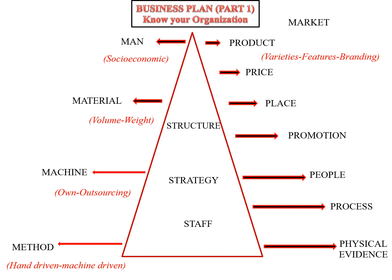Product means the varieties, features, and branding of a product. Price is connected to discounts, allowances, credit, loans, and different pricing strategies. Place means how you channelize your product, where you locate it, and how much of the market is covered. Promotion is connected with the promotion mix — from advertisement to sales promotion to personal selling to direct marketing — everywhere you need promotion to create positioning of your product in the minds of customers.